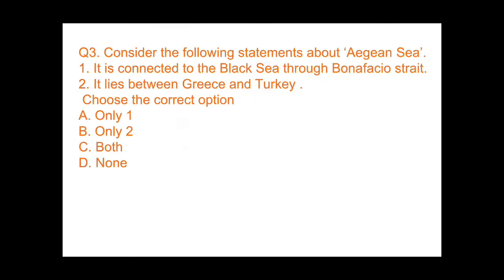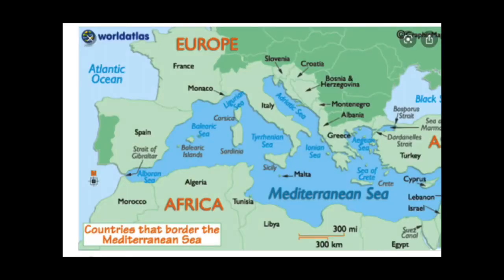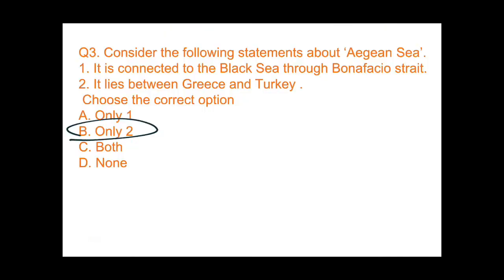Question 3: consider the following statements about the Aegean Sea. Statement 1 — it is connected to the Black Sea through the Strait of Bonifacio: wrong, because the Aegean Sea lies to the south of the Black Sea and the Strait of Bonifacio lies to the west of Italy. Statement 2 — it lies between Greece and Turkey: correct. So the answer is only Statement 2 (option B). On the map you can see the Aegean Sea between Greece and Turkey, while the Strait of Bonifacio divides Sardinia and Corsica.